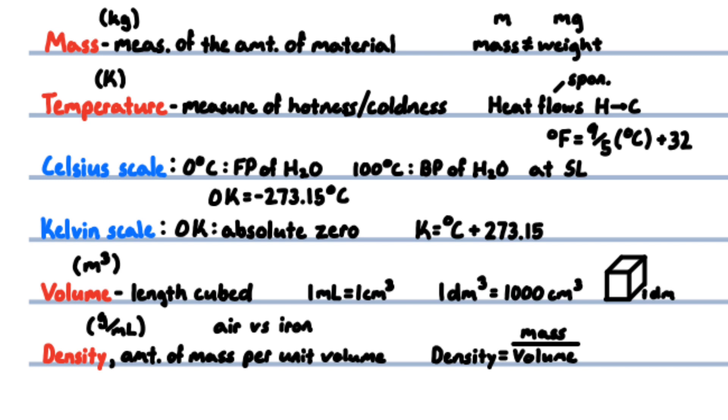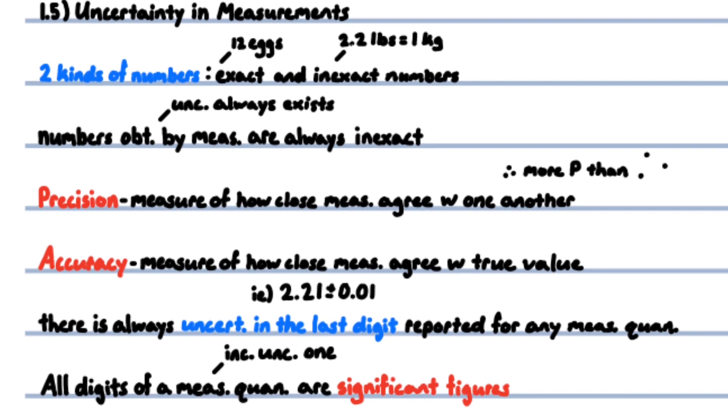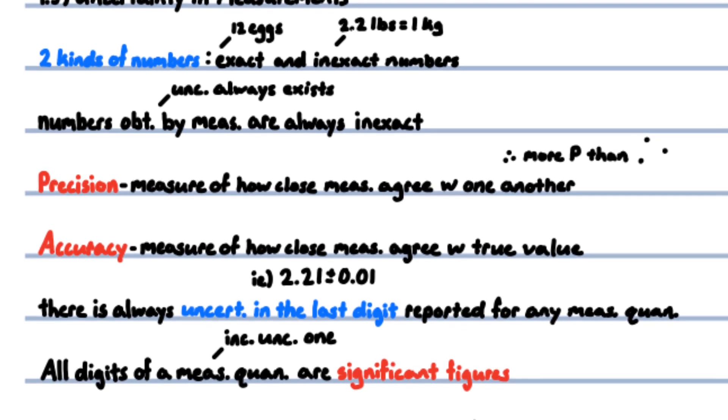A cube with side length of one decimeter has a volume of 10 cubed or 1000 cubic centimeters, because one decimeter is 10 centimeters. Density is the amount of mass per unit volume. Iron is said to be heavier than air because it has a higher density, more mass per unit volume. Density equals mass divided by volume.